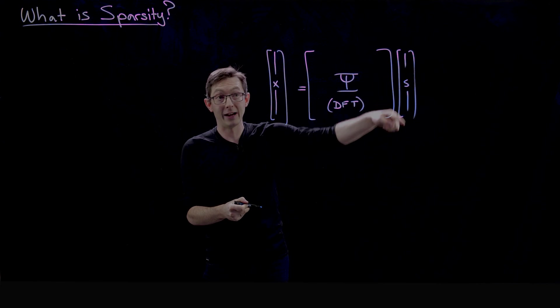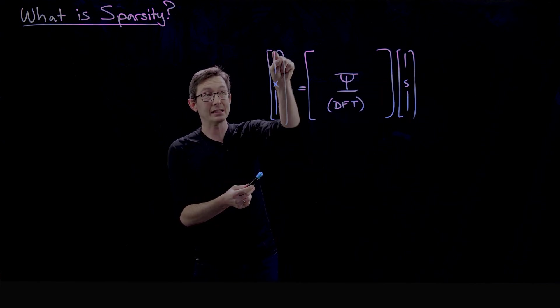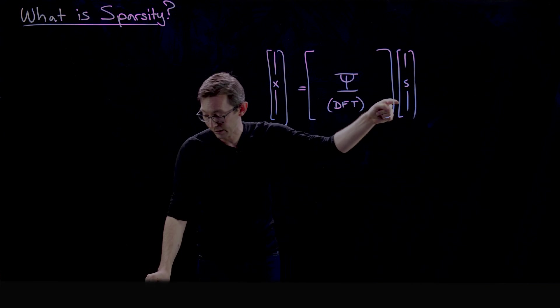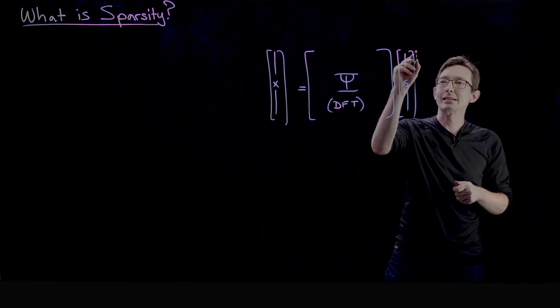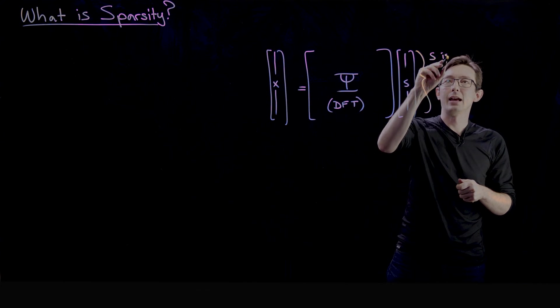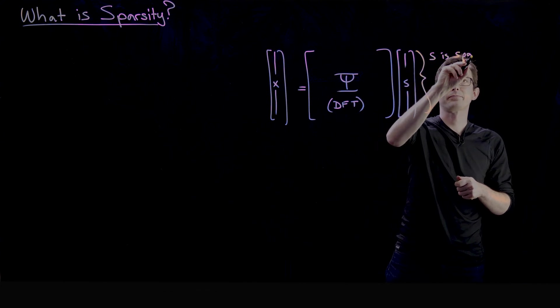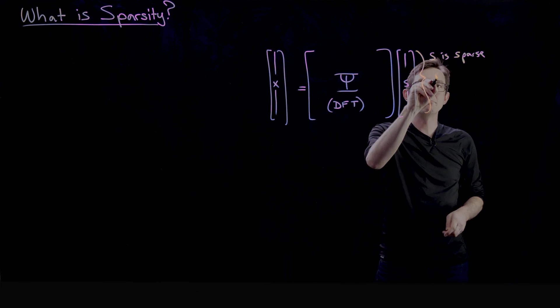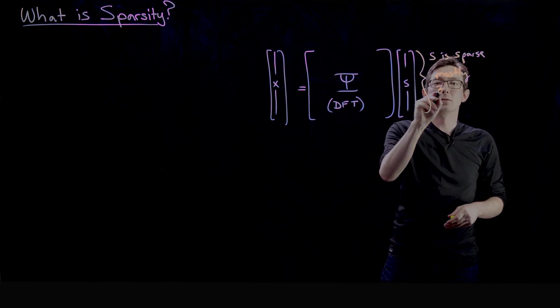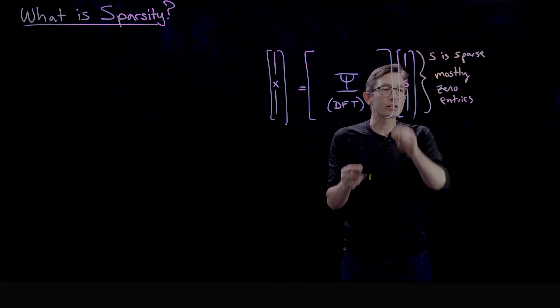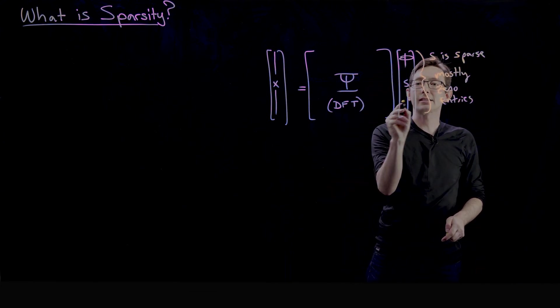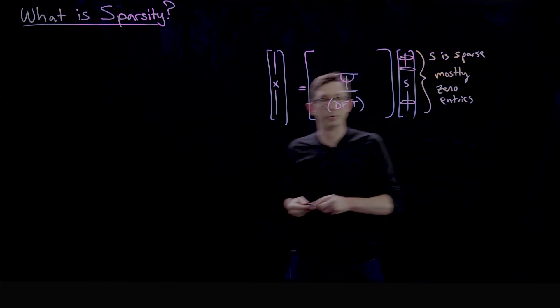This tall vector s has exactly the same number of elements—if this has a million elements then s has a million elements. But the key observation here is that s is sparse, which means that it has mostly zero entries, so only a small number of these s terms are non-zero.